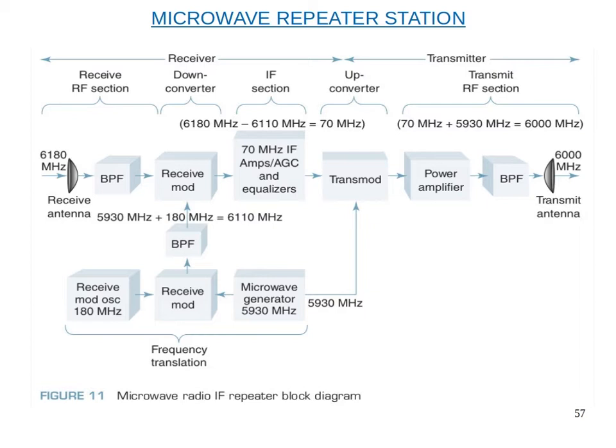The equalizer removes channel travel losses and non-linearities, compensating amplitude distortions. The signal is then up-converted in the transmode section, converting from IF frequency to RF frequency for retransmission.